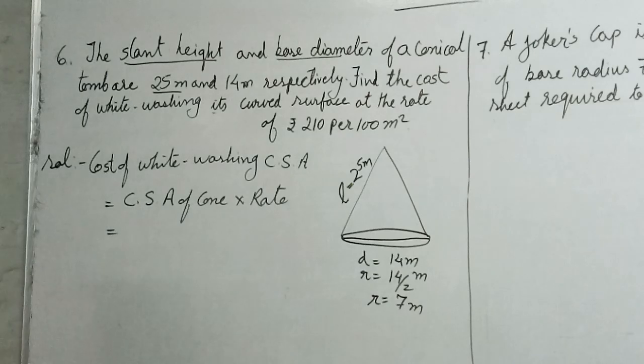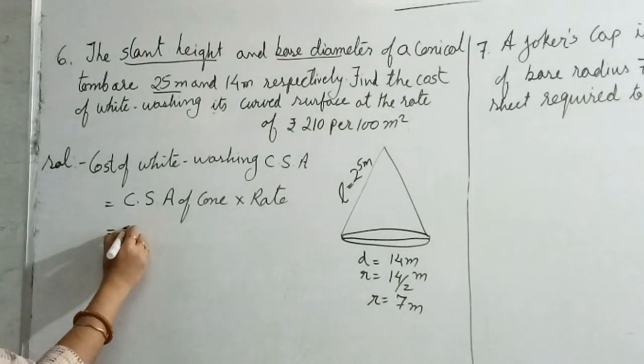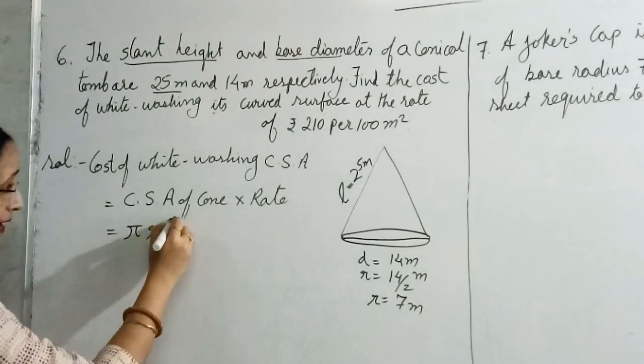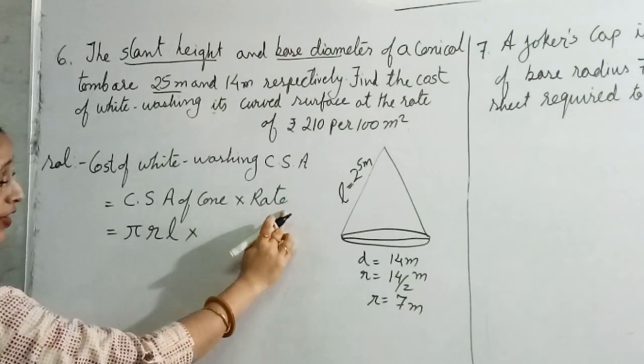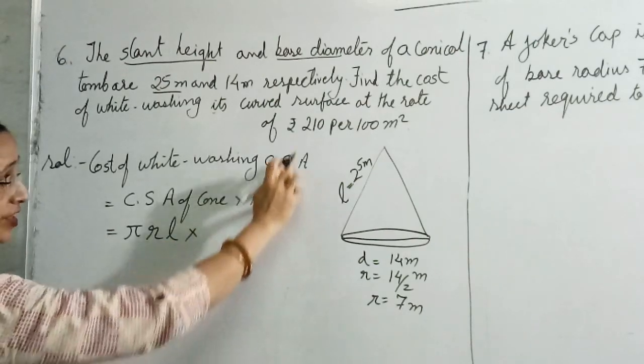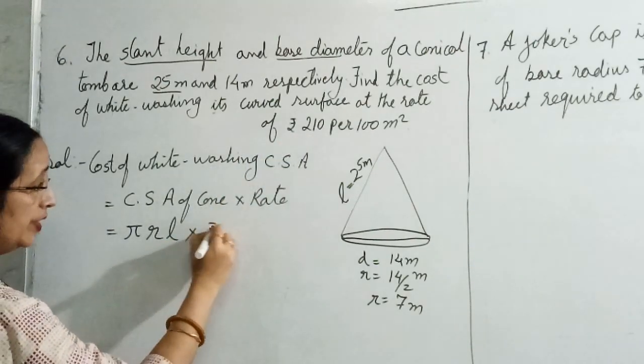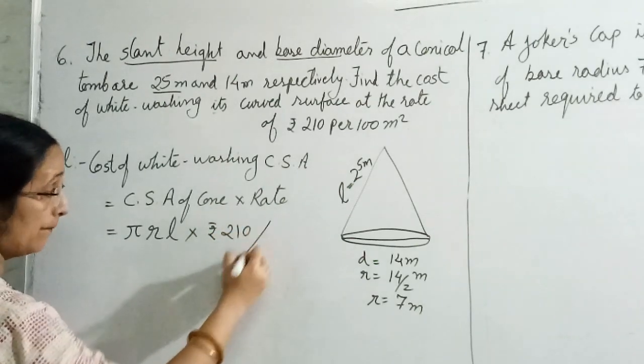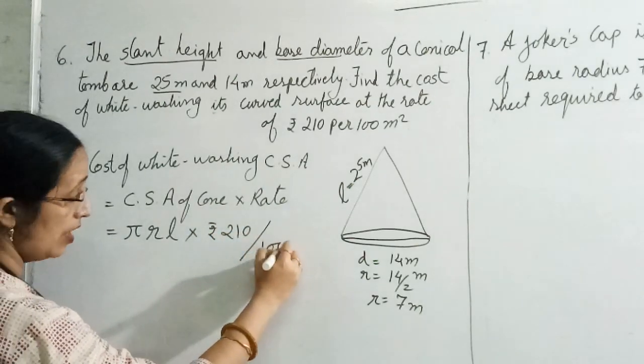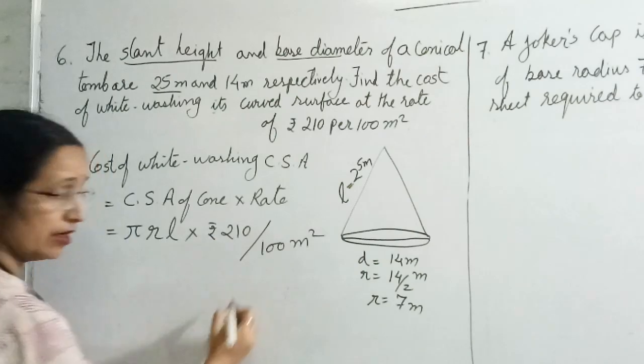So you will write the formula. What is the formula? Pi r into l into rate. What rate they have given? They have given rupees 210 per 100 meter square.